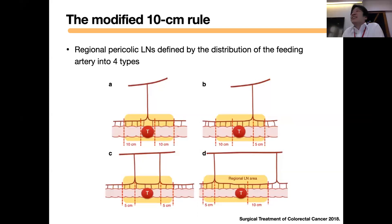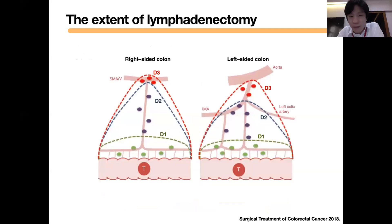The definition and the extent of dissection differ between institutions. Even in Japan, they do it differently, so you have to look into the detail when reading through the studies. Some institutions include both SMV and SMA, but some institutions do only the anterior side of SMV. You have to look through the detail because there are technical differences between institutions.